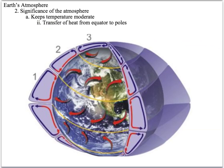The atmosphere actually moves — air moves from one place to another on the planet. Warm air, mostly at the equator, rises and is directed toward the poles. This also moderates Earth's climate because the polar regions don't get as cold since air is able to move from the equator to the poles.